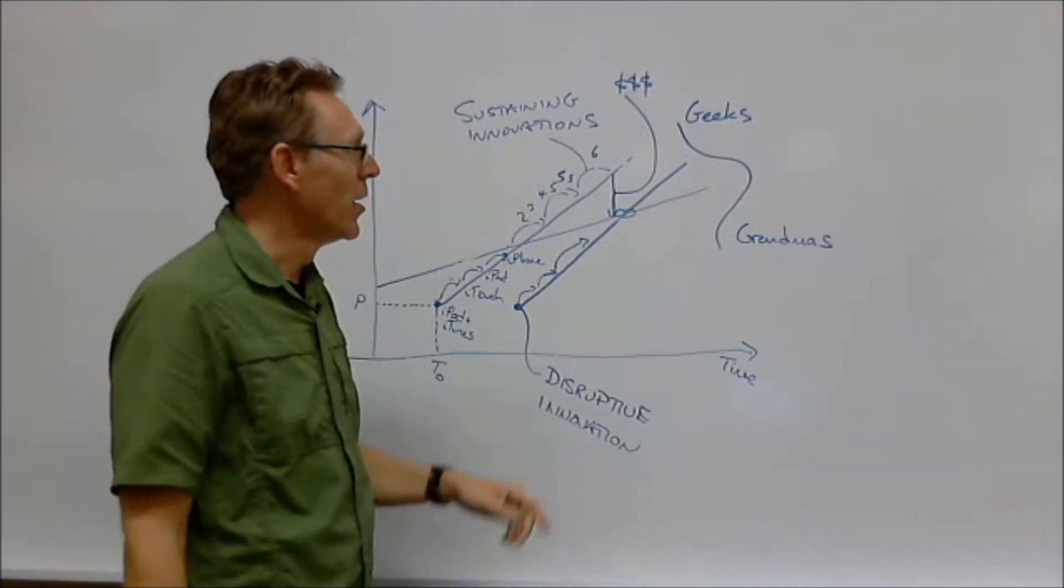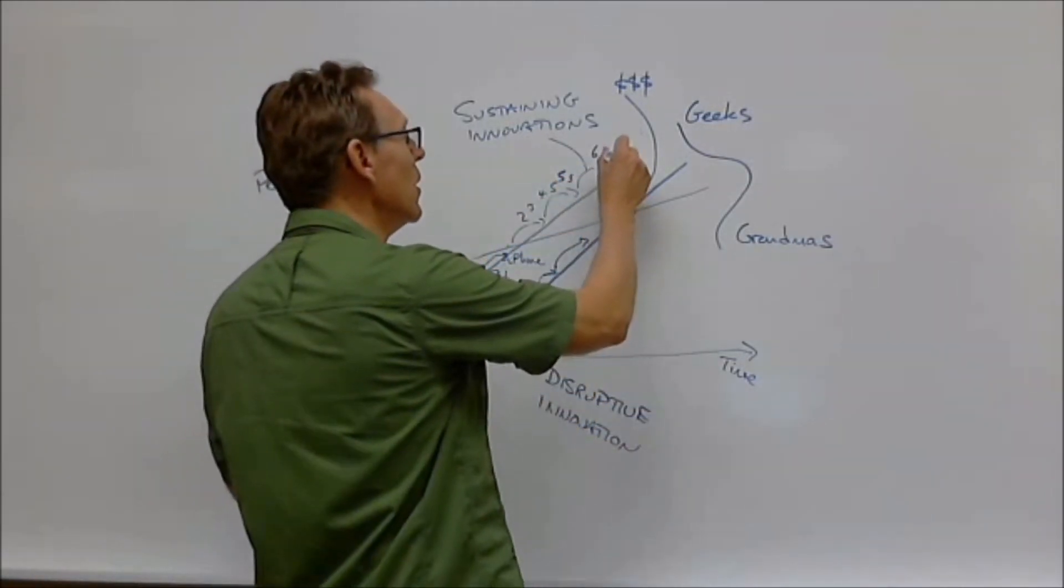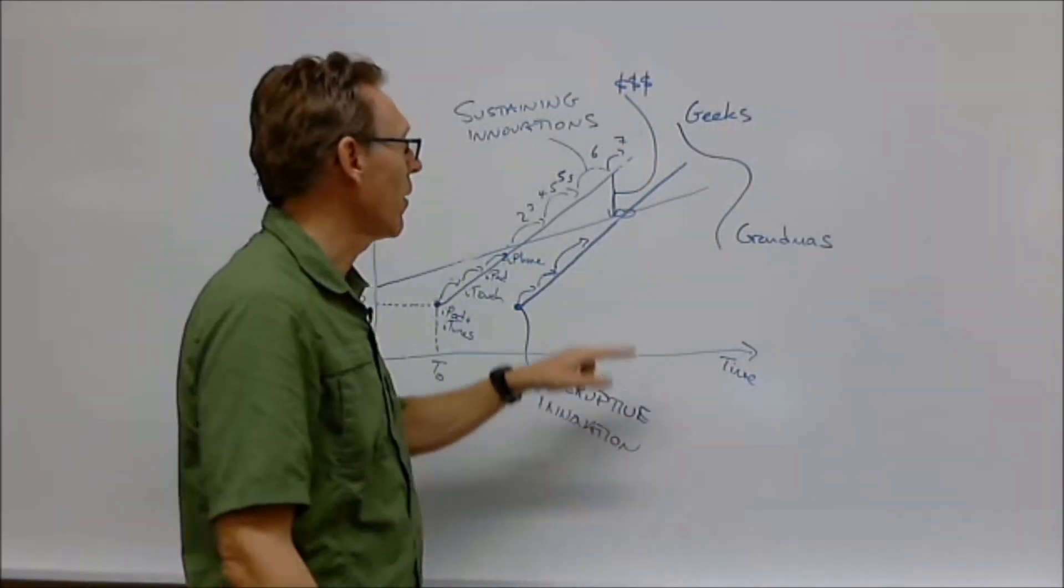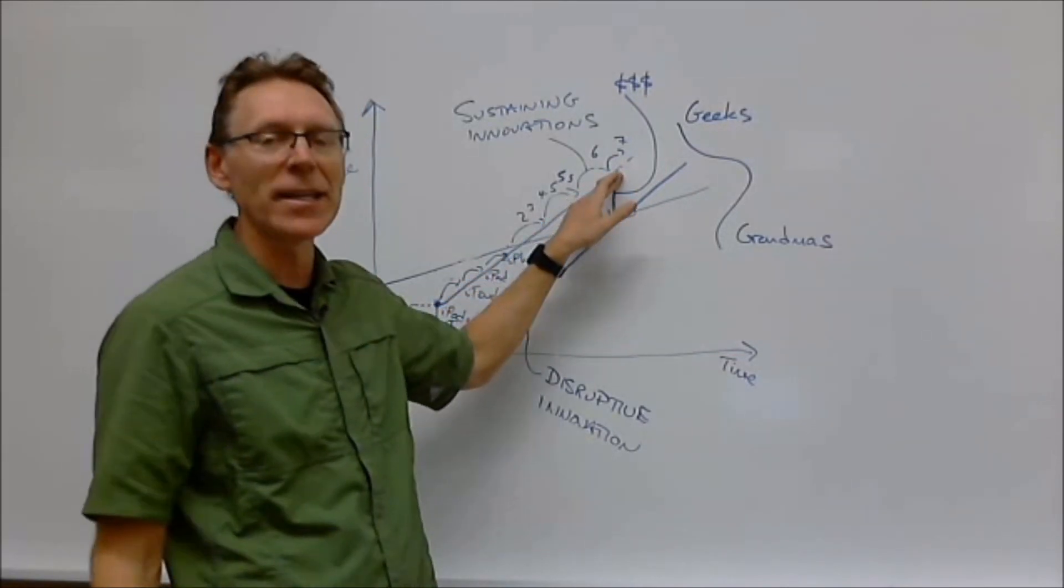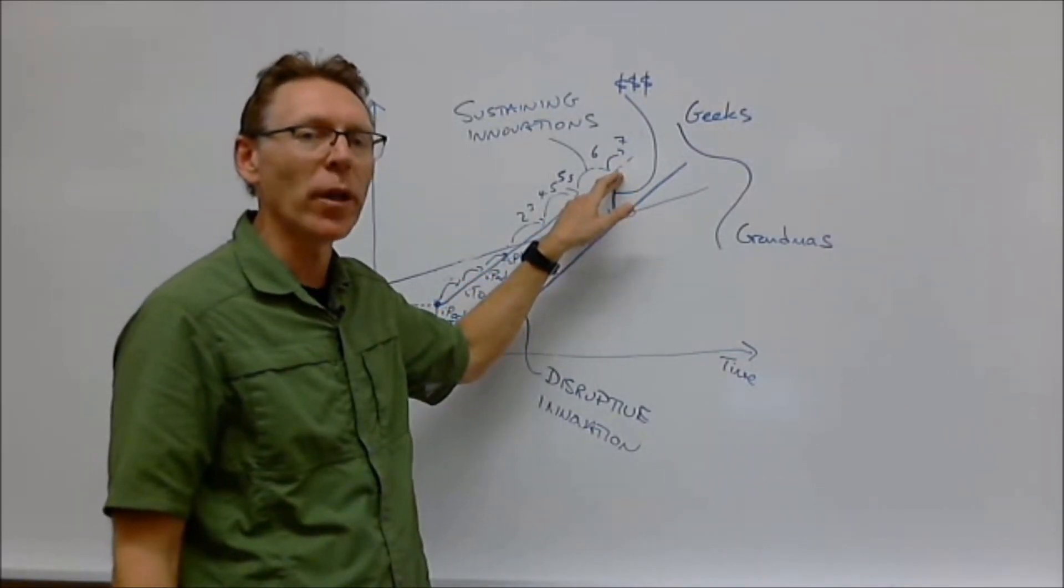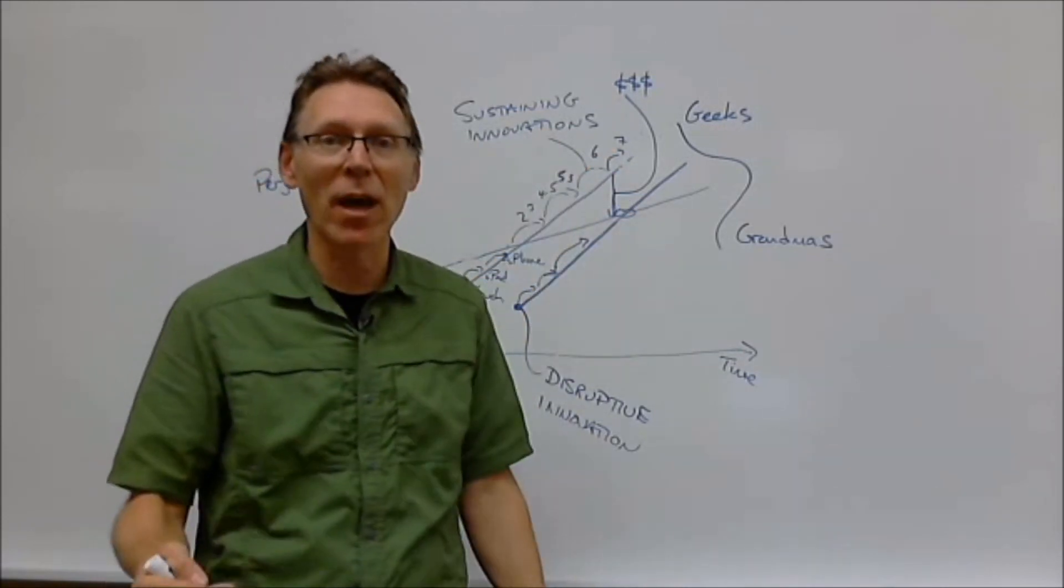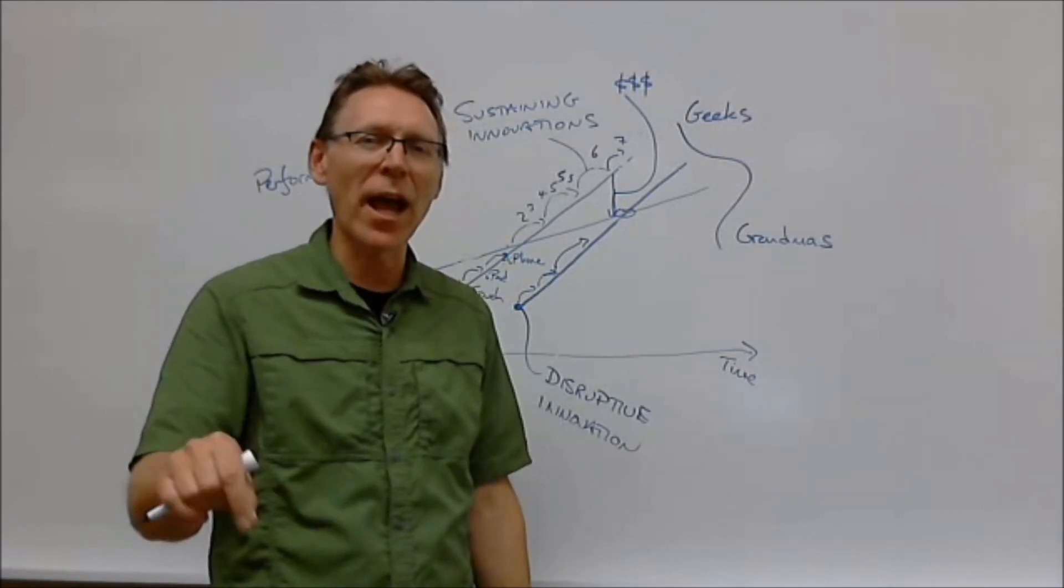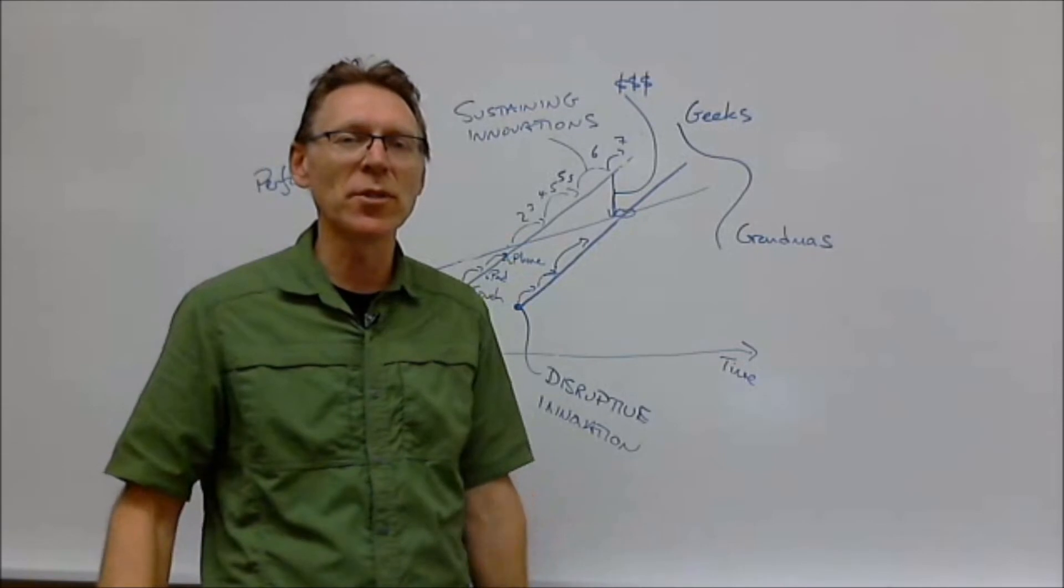So right now you're at the 6, maybe even the 7. Oh my gosh, what's new on the 7? Nothing. But you are way overpaying. You have way exceeded what most people in the marketplace can do. Yeah, there's a faster chip in the 7 that makes things faster. But if all I did was put a faster chip in an iPhone 4, you'd be just as happy.